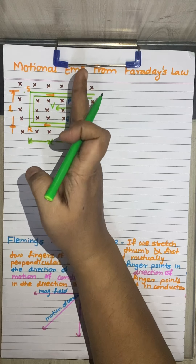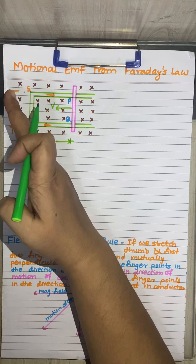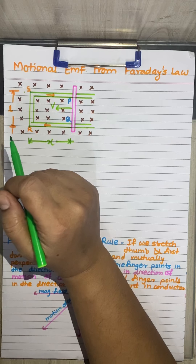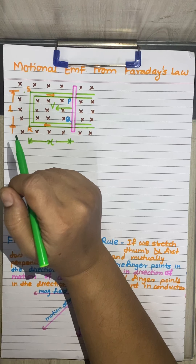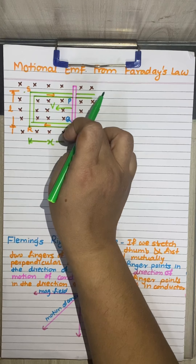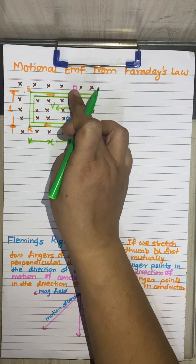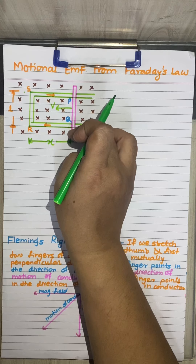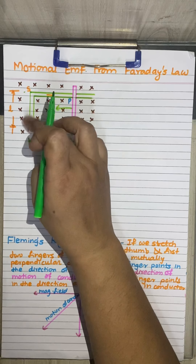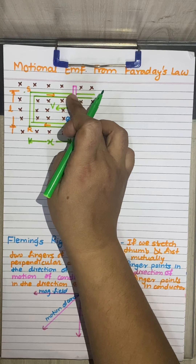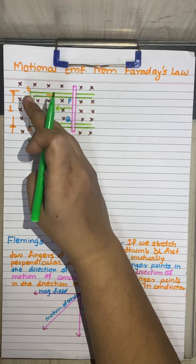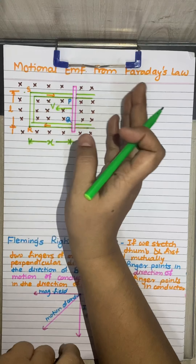As the area of loop PQRS decreases, the magnetic flux linked with this closed loop also decreases. Hence, an EMF is set up in rod PQ, causing induced current to flow in the circuit along the path PQRSP. The direction of the induced current can be determined by Fleming's right-hand rule, which will be stated in the next session.